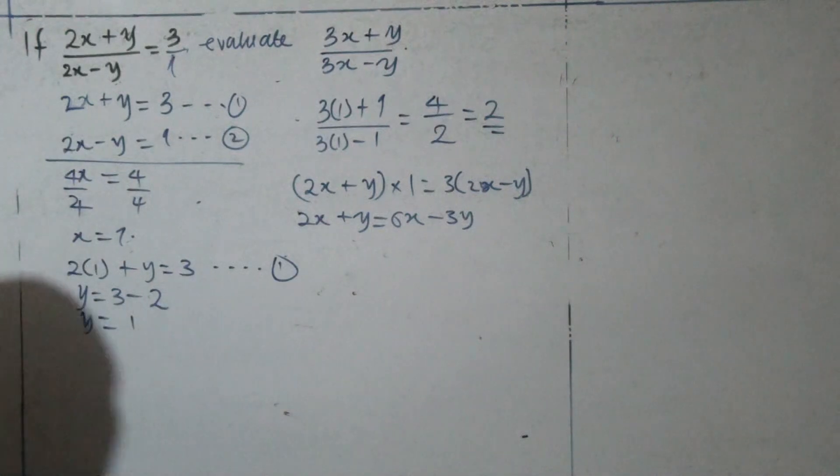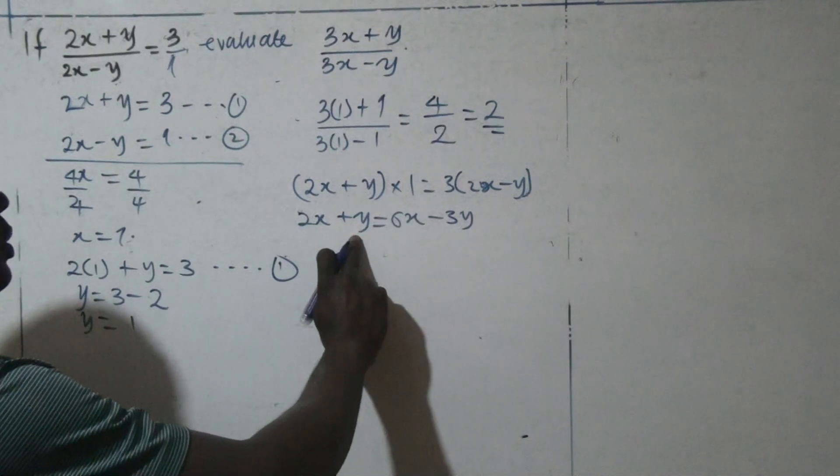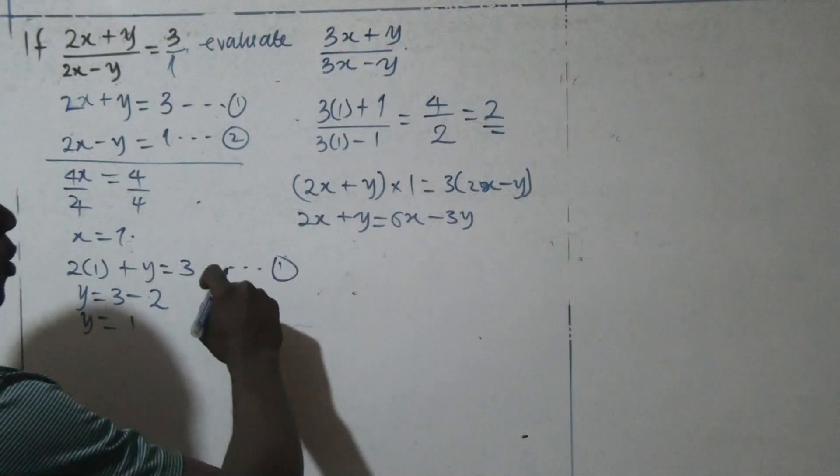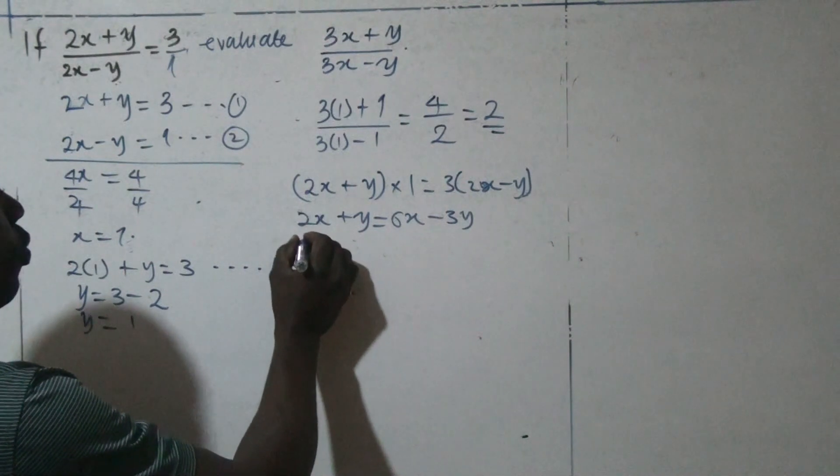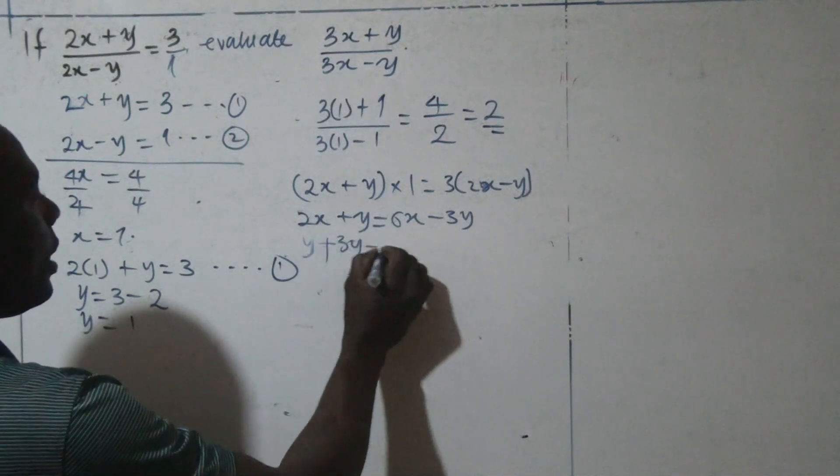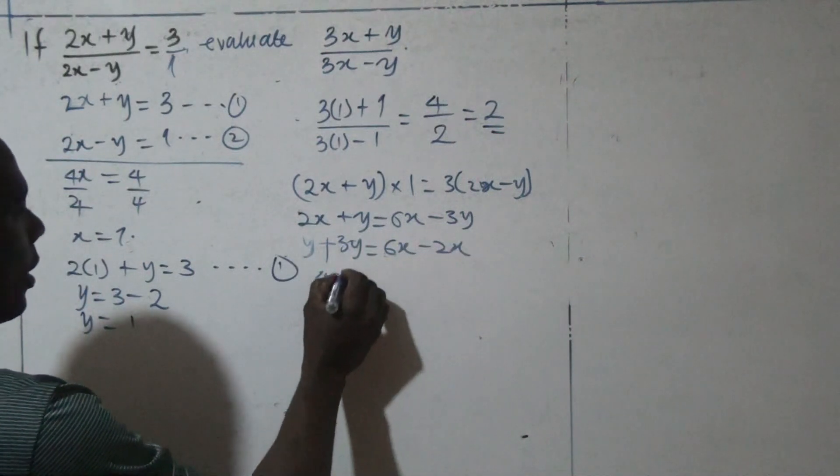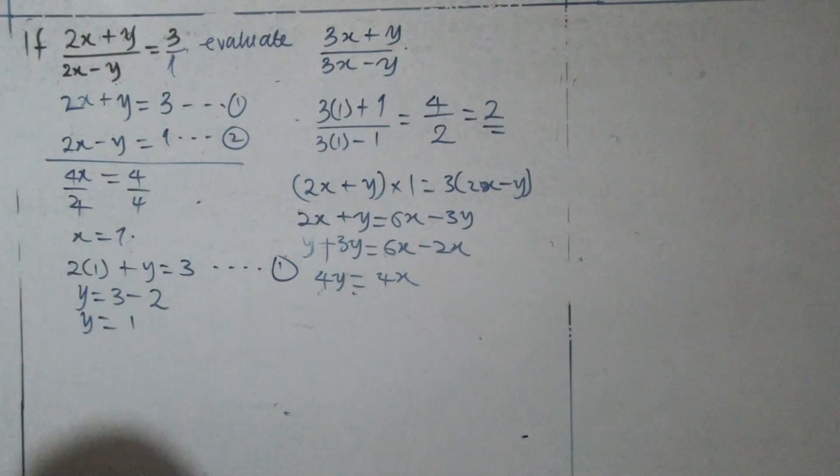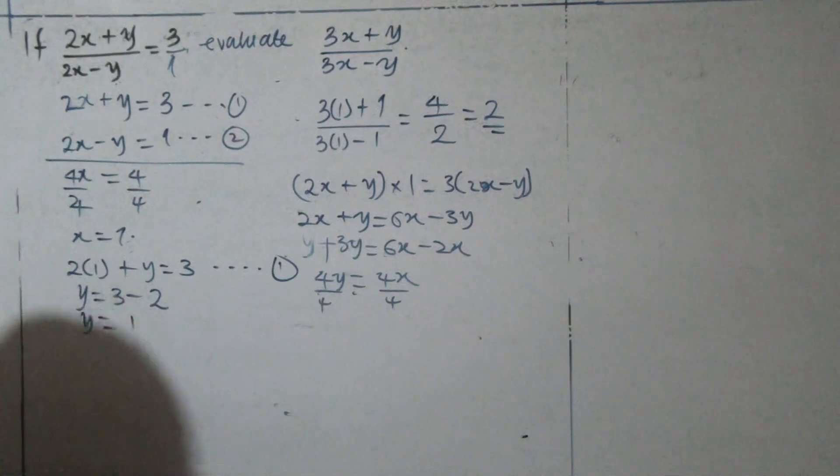Then, we will collect like terms. Here, 3y, we move this way, it becomes plus 3y. Y, 2x, which is positive, moving the other way, it becomes minus 2x. So, here, we collect like terms, and it becomes y plus 3y is equals to 6x minus 2x. So, here, we have 4y is equal to 4x. So, we divide both sides by 4, since they have the same coefficient.